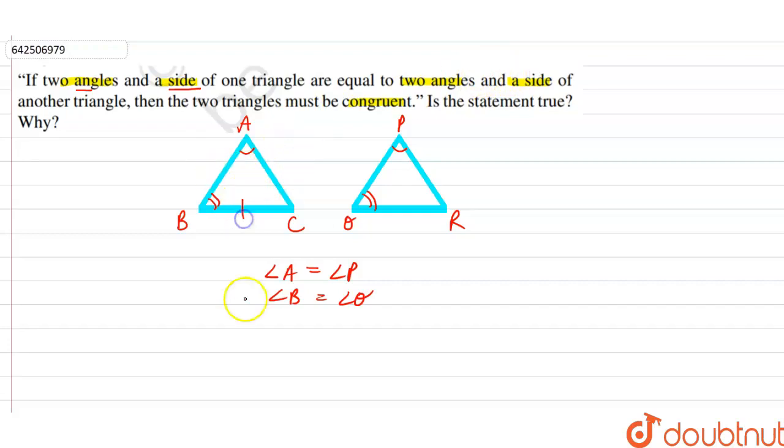So if in question, right, it is given that BC is equal to PR, right? If BC is equal to PR, let's say, so we can say that these two triangles will not be congruent to each other, right?